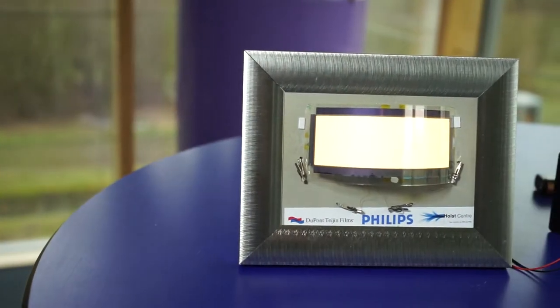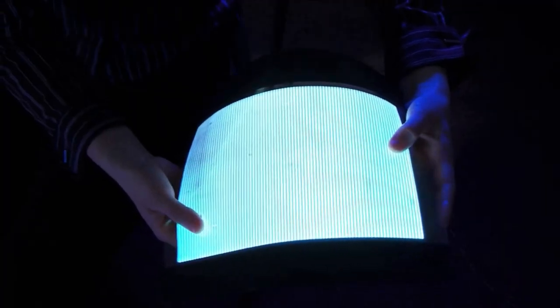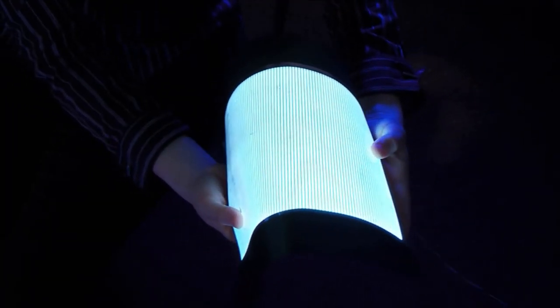One of the main advantages of OLED lighting compared to other technologies is that they can be very energy efficient and make all kinds of colors. You can make them dimmable and now we have even made devices 30 centimeters wide by roll-to-roll production.